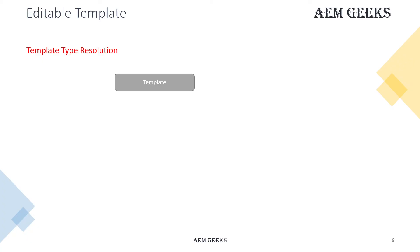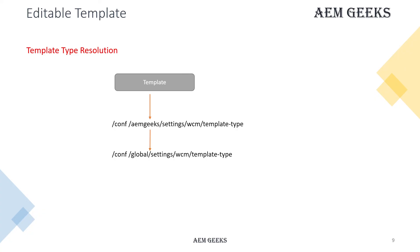When you create a template, the system resolves available template types in a specific order. First it checks your project-specific folder under /conf. If no template type is found there, it checks /conf/global. If still nothing is found, it checks /apps/settings/wcm/template-types. Finally, if nothing is found there, it falls back to /libs/settings/wcm/template-types — which is why when you start with a new folder you see the default HTML5 template types defined in the libs folder.